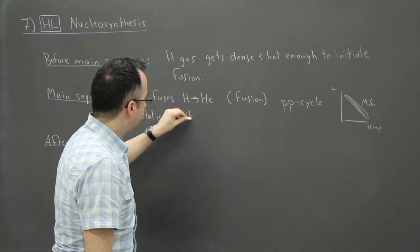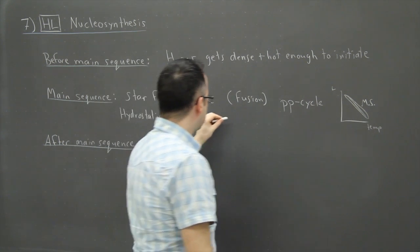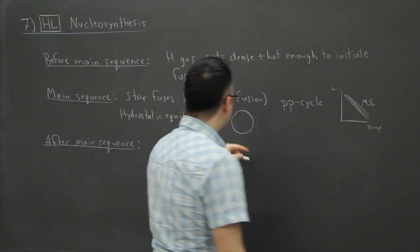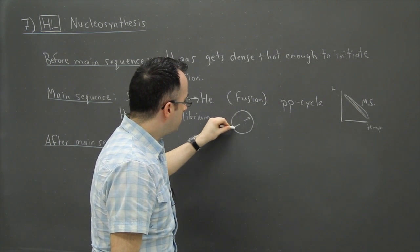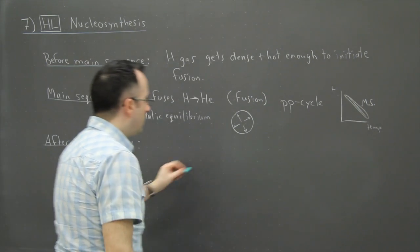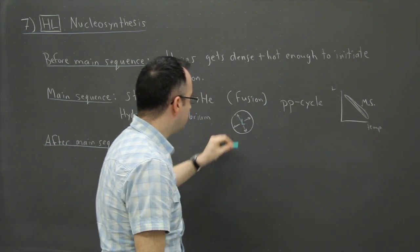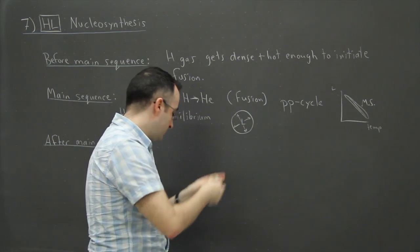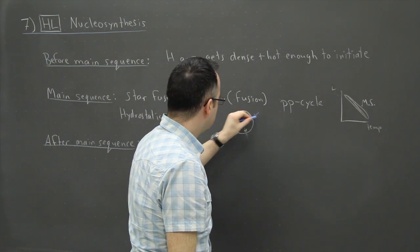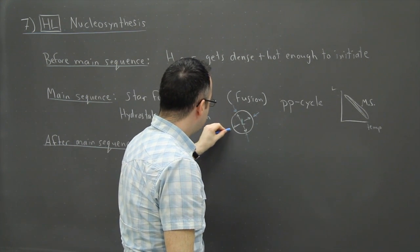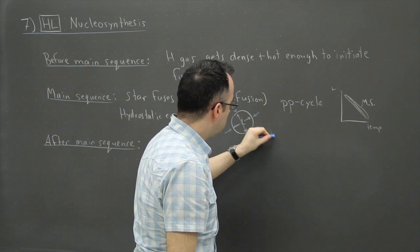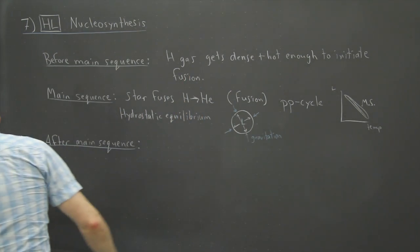And what that means is, I talked about this before in the SL part, but basically in the star here, you have this constant battle between the outwards pressure due to the luminosity, because there's actually radiation pressure here. It's actually because of the luminosity of the star, it's pushing outwards. But you also have this inwards gravitational force. And that's because it has its own matter. And matter attracts.